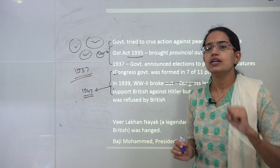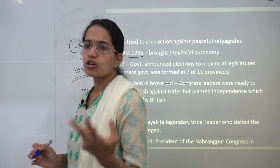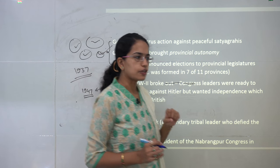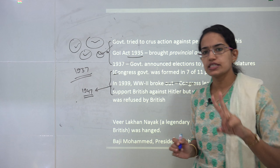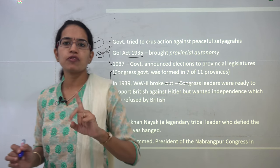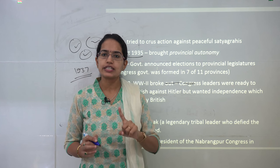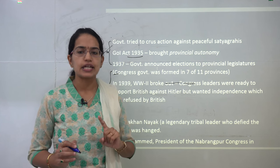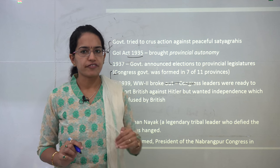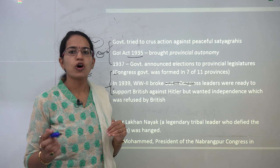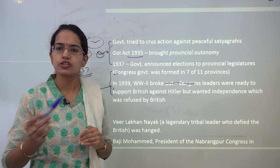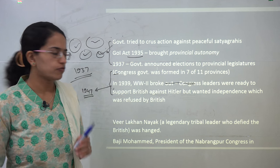Then the Second World War started. Congress leaders told the Britishers there were two ways forward — they would help with the war only on one condition: that India be granted independence. The Britishers were not in favor of providing independence, and therefore the Congress leaders did not support the British move during World War 2.